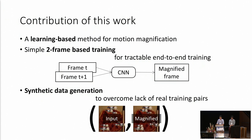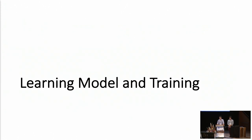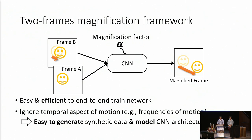To tackle these challenges, in this work we first find a better representation for motion magnification in a data-driven way. Second, we propose a two-frame based training which is not only efficient to train but also generalizable to longer frame windows during testing. Last but not least, due to the difficulty of obtaining real-world data, we generate synthetic data with very simple simulation. With these contributions, we get several improvements over the state of the art, including better handling of object boundaries.